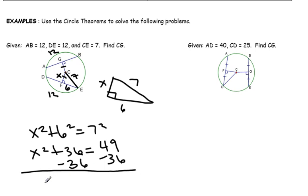So I get X squared equals 13. So X would be the square root of 13, which is 3.6. So that means that this length here is 3.6, which is the same as this length here, CG.